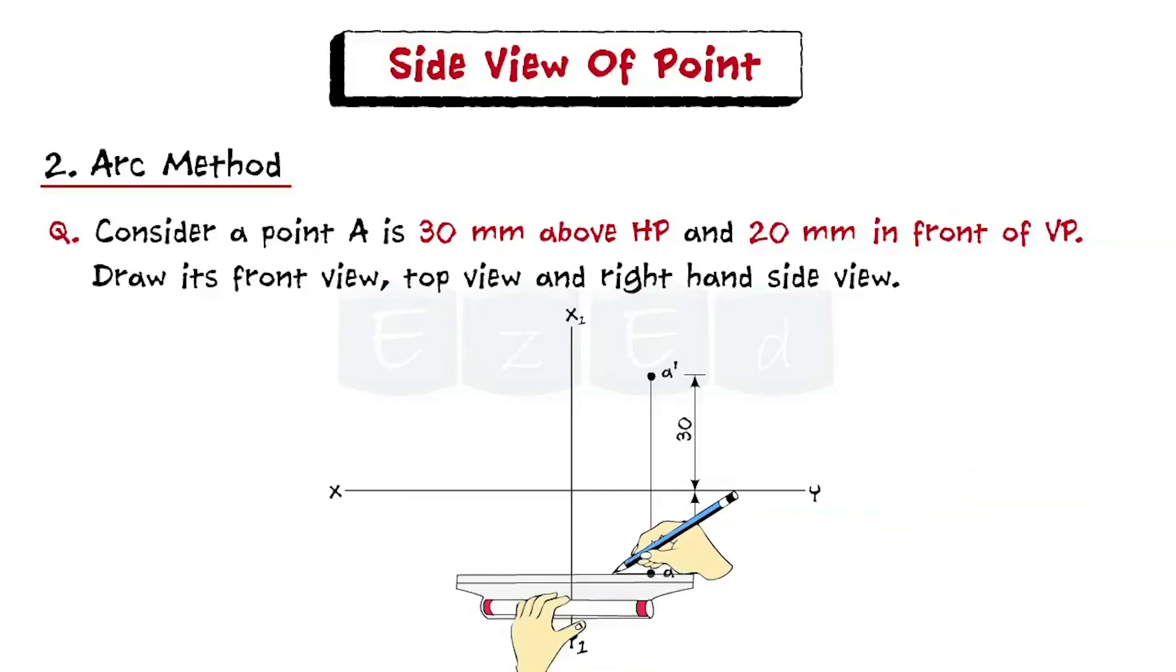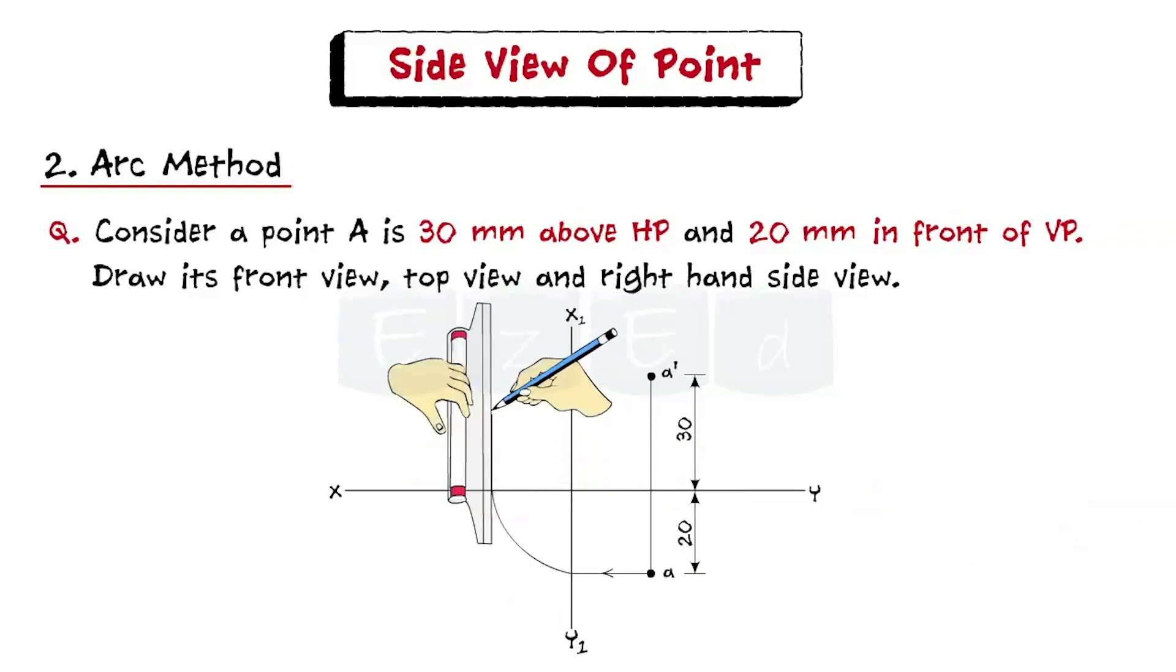Draw a horizontal line from A till it cuts line X1, Y1 and then draw arc till it cuts line XY and then project it vertically upwards.